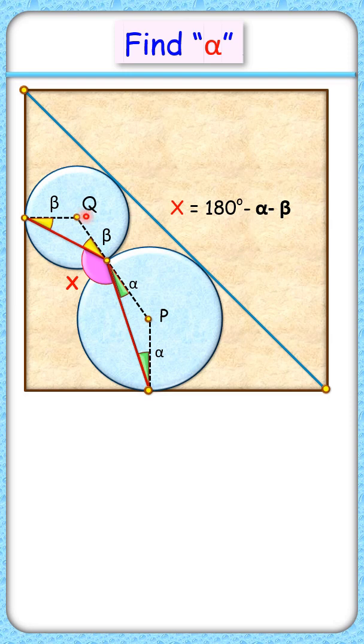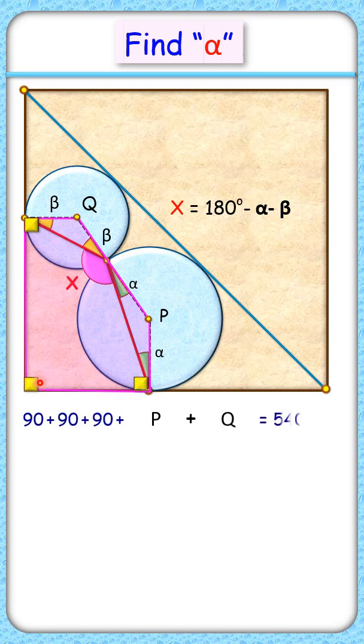Also, if we check this pentagon here, the sum of these angles is 90 plus 90 plus 90 plus p plus q, where angle p is 180 minus 2 alpha and angle q is 180 minus 2 beta.